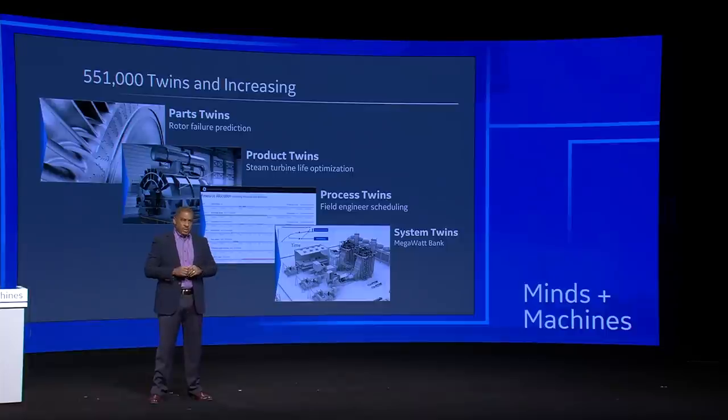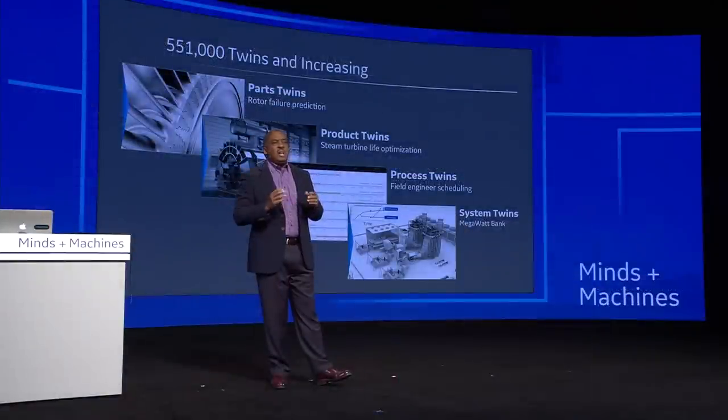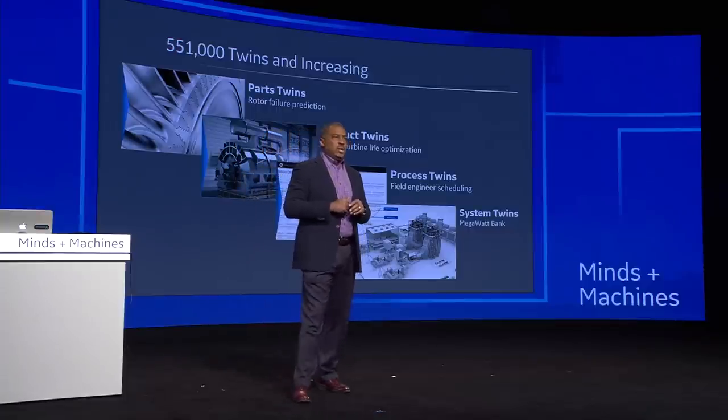Several twins deliver value in different ways. We have parts twins — like the rotor failure prediction you just saw — which deliver early warning about a problem and tell you about the actual failure you'll encounter. We have product twins, which optimize the remaining life of a steam turbine or any asset against maintenance cost. Process twins find ways to optimize scheduling of field engineers to maximize utilization. System twins find a way to optimize against a multiplicity of KPIs, balancing revenue against remaining life against maintenance cost.